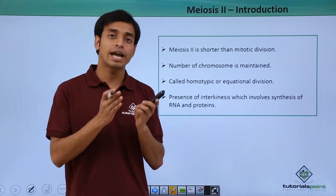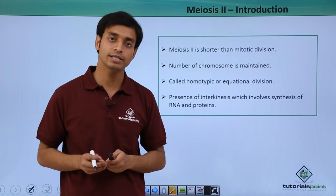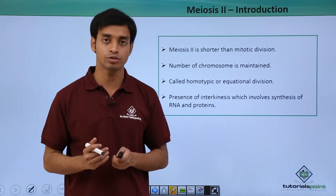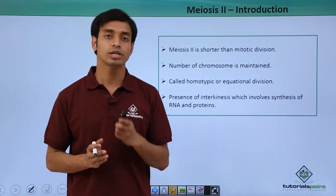This is similar to the activities performed in case of mitosis. But in Meiosis I, we have seen the number of chromosomes got reduced, whereas here the number of chromosomes is maintained.